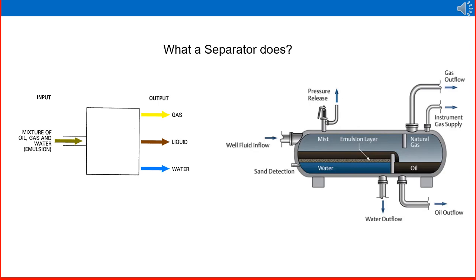Looking at the right side of the figure, well fluid enters from one side. Inside, there are internal arrangements called separator internals. These act as mechanical helpers. Different types of internal mechanical devices accelerate and perfect the separation, also breaking the emulsion. Due to pressure and gravity differences, gas travels to the top gas outlet. We will discuss the various internals one by one.